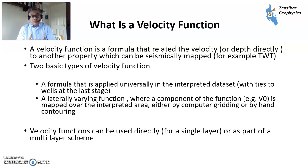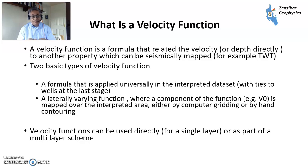So what's a velocity function? It's a formula that relates velocity or depth directly to another property which can be seismically mapped — for example, two-way travel time. There are two basic types: a formula applied universally to the interpreted dataset where you tie the wells at the latest stage, or lateral variations where a component of the function is mapped over the interpreted area, either by computer gridding or by hand contouring. You can use velocity functions directly for one layer or as part of a multi-layer scheme.